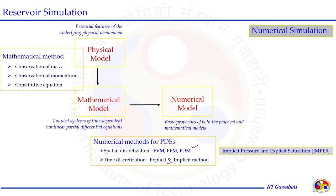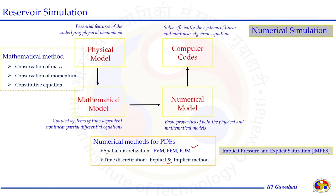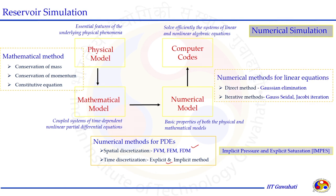One very popular method is the IMPS method, in which implicit pressure and explicit saturation are defined. Once the numerical model is developed, a computer algorithm is needed to solve these models. The system of linear and nonlinear algebraic equations can be solved efficiently with the computer model. The numerical model converts partial differential equations into linear algebraic equations, which can be solved using direct methods such as Gaussian elimination or iterative methods such as Gauss-Seidel and Jacobi iteration.